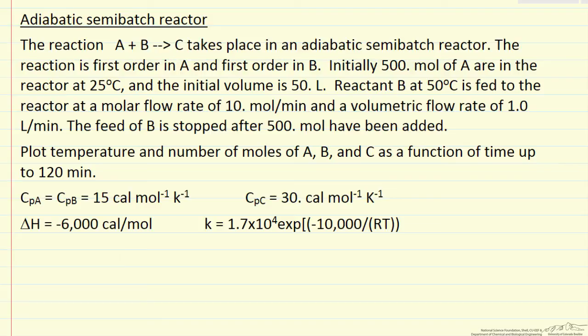We're going to add a flow rate of 10 moles per minute until we've added 500 moles, namely 50 minutes, a stoichiometric amount of B. Then we stop the flow rate of B, and what we want to do is plot how the temperature changes as a function of time, and how the number of moles of A, B, and product C changes as a function of time, up to 120 minutes.